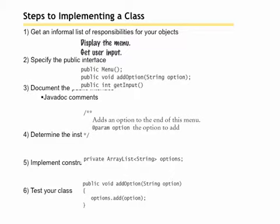Steps to implementing a class. This is a nice little checklist for you. I'm sorry that the slide has a couple of issues with formatting. We get an informal list of the responsibilities of the objects. What is it going to do? Display the menu, get user input.